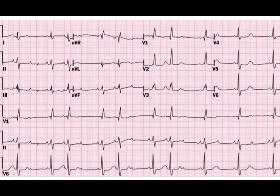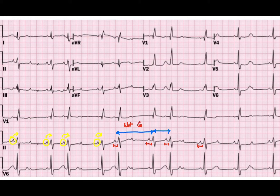If you recall my discussion about normal sinus rhythm from my first lectures, you will know that for a rhythm to be normal sinus, there should be a P wave before every QRS and a QRS after every P wave. The PR interval should be constant, the R-to-R interval should be constant, and the P-to-P interval should also be constant.